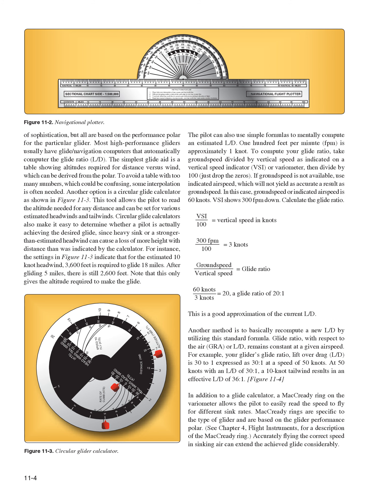The pilot can also use simple formulas to mentally compute an estimated L/D. Note that 100 FPM is approximately 1 knot. To compute glide ratio, take ground speed divided by vertical speed as indicated on a VSI or variometer, then divide by 100. For example, if ground speed is 60 knots and VSI shows 300 FPM down: vertical speed in knots = 300/100 = 3 knots; glide ratio = ground speed/vertical speed = 60/3 = 20. A glide ratio of 20:1 is a good approximation of the current L/D.